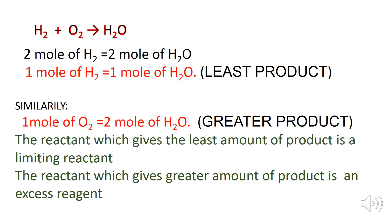Look at the unbalanced chemical equation. Here, one mole of hydrogen combines with one mole of oxygen to form one mole of water. According to the balanced chemical equation, two moles of hydrogen produces two moles of water. According to the unbalanced chemical equation, one mole of hydrogen produces one mole of water.